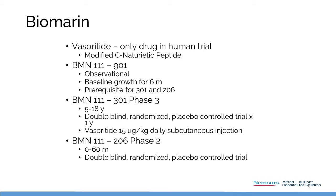The 901 trial is an observational trial where a child with achondroplasia is brought in, their growth is monitored for six months, and then they can go into one of these trials. The currently active trial is for ages five to eighteen — a double-blind, randomized, placebo-controlled trial over one year with daily injections.